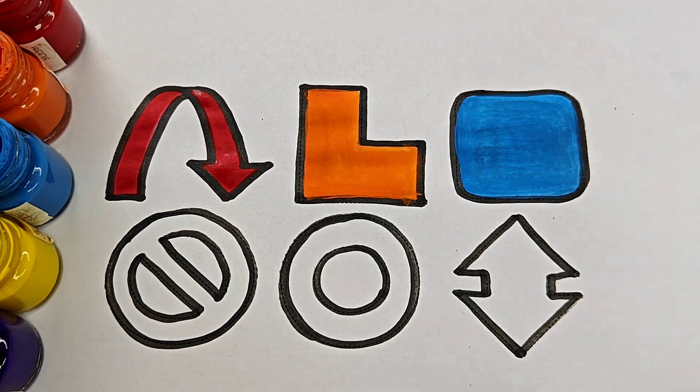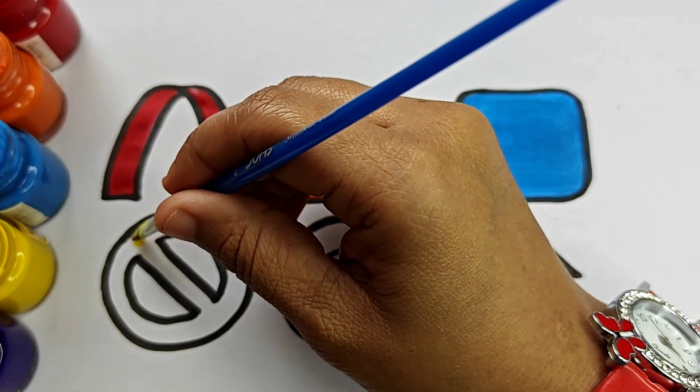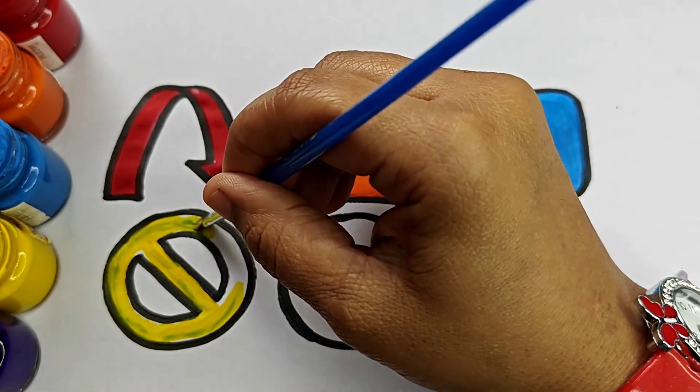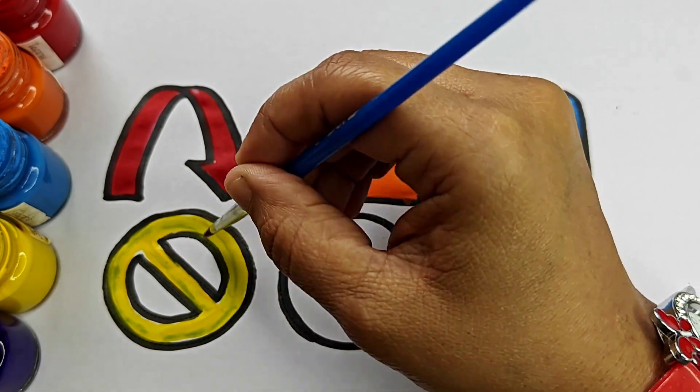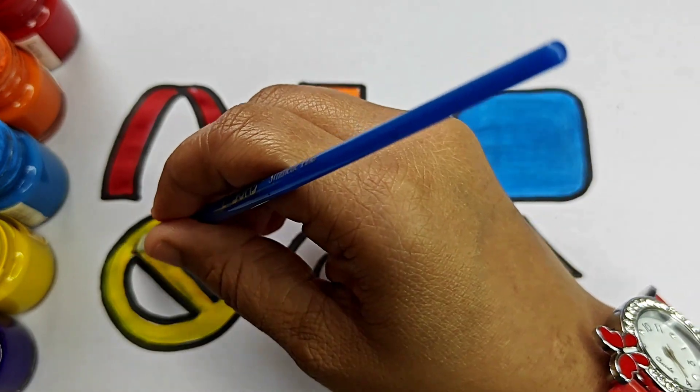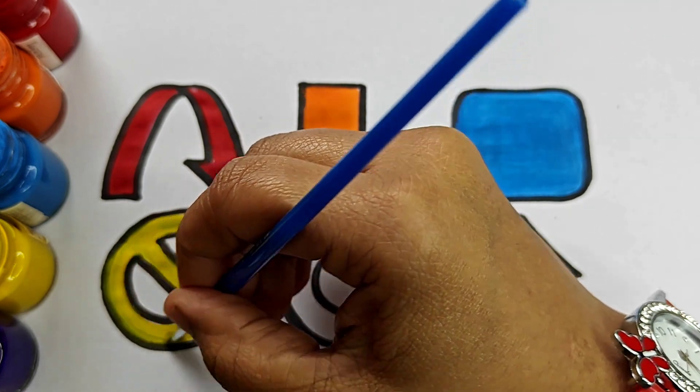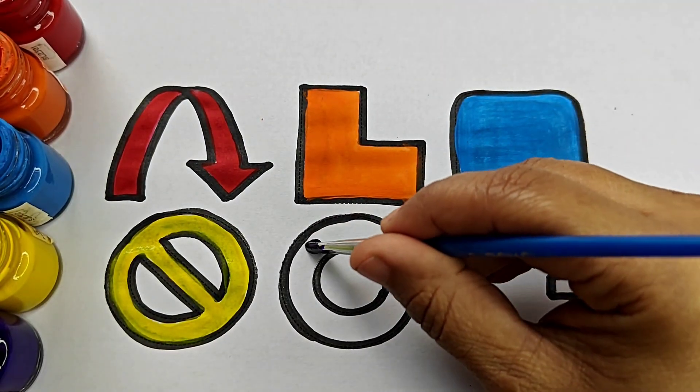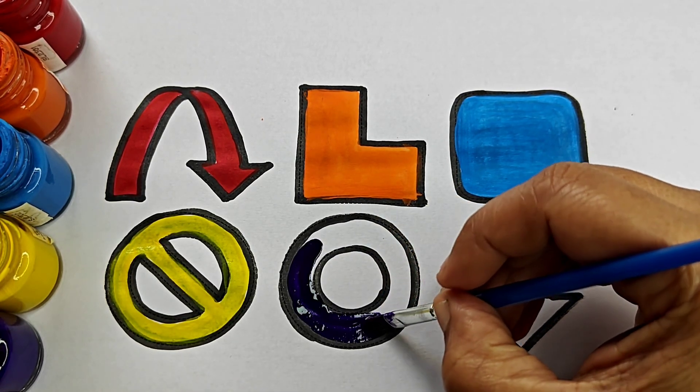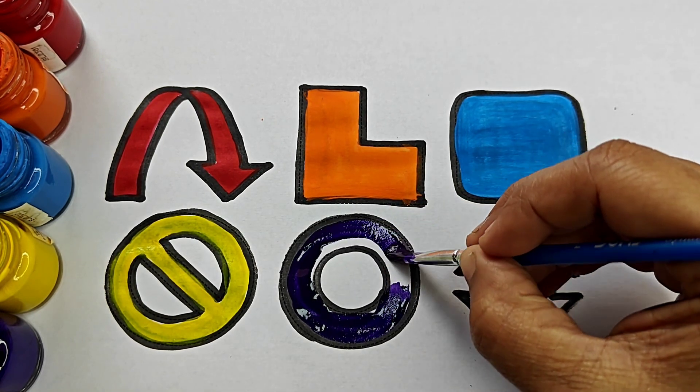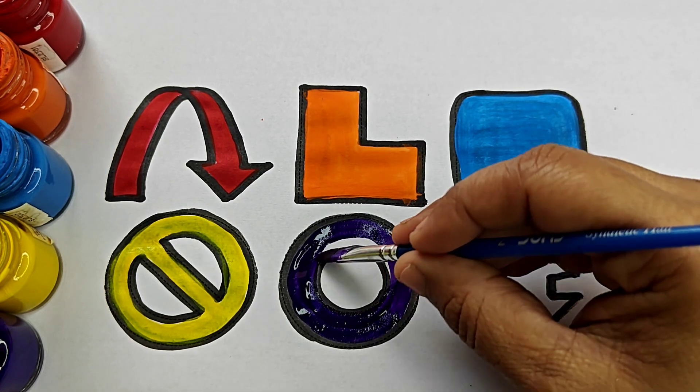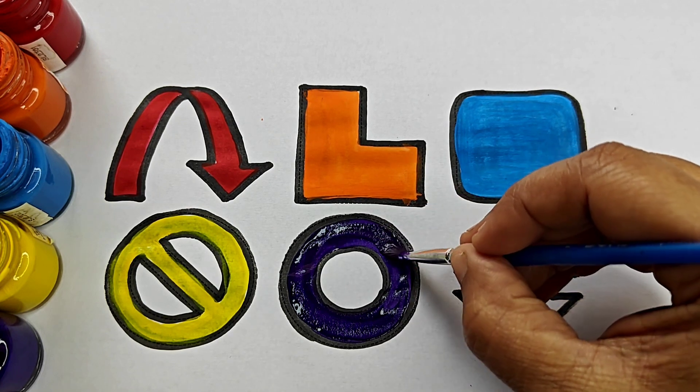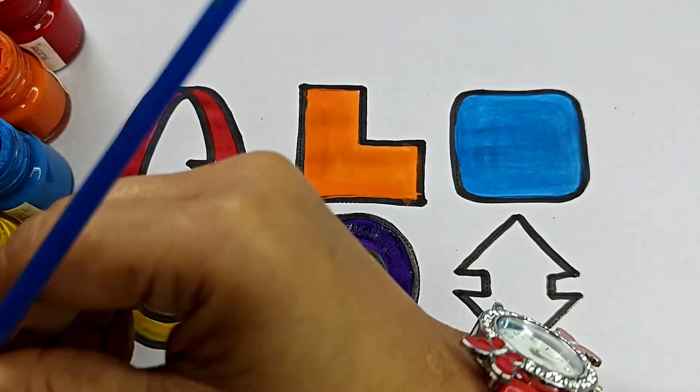Rounded square, yellow color. Not allowed symbol, violet color. Hollow circle, green color.